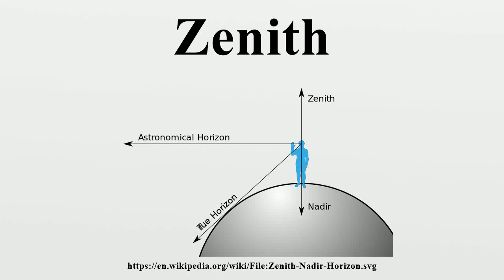Zenith refers to an imaginary point directly above a particular location on the imaginary celestial sphere. Above means in the vertical direction opposite to the apparent gravitational force at that location. The opposite direction — the direction in which gravity pulls — is toward the nadir.